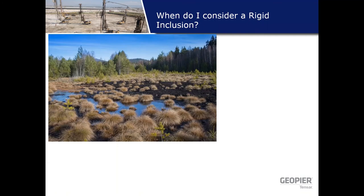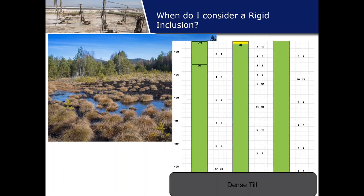From here on out we'll focus on rigid inclusions. When do you want to consider a rigid inclusion? The answer really depends on the project and the soil characterization, so the best way to explain is with a few examples. If you're in a swamp or low-lying wetlands condition, you may not be surprised to find a thick 30-foot organic stratum with N60 blow counts ranging from 4 to 12 blows — some type of soft to medium-stiff organic stratum. Underlying that stratum is a really good dense till.